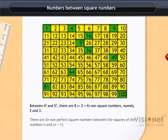So in general, we can say that there are 2n non-perfect square numbers between the squares of the numbers n and n plus 1.